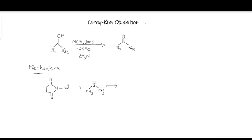The lone pairs on sulfur extract this chlorine from N-chlorosuccinamide to form this intermediate.